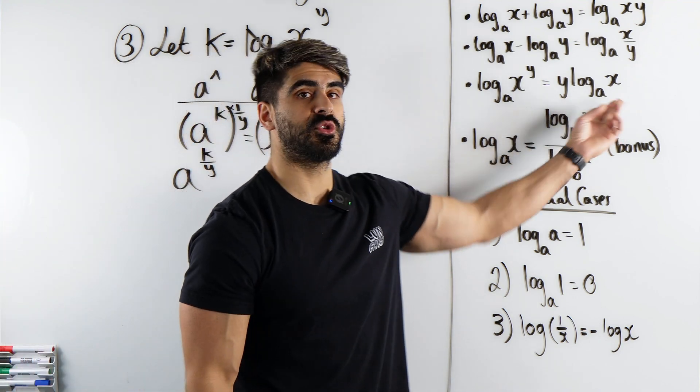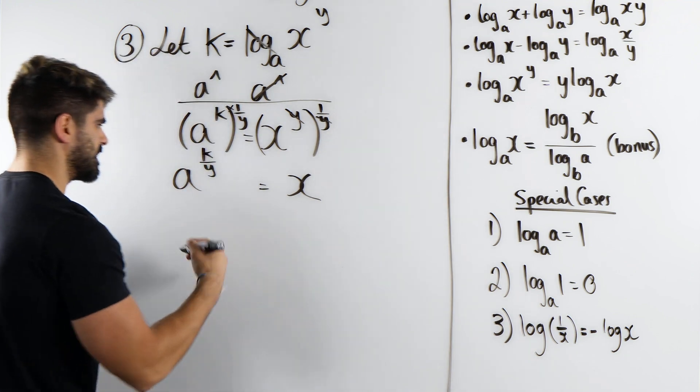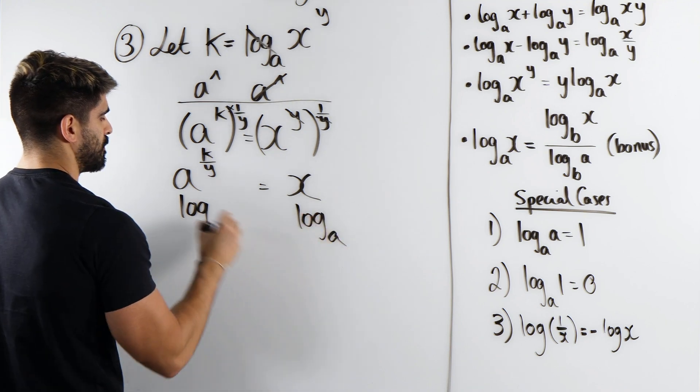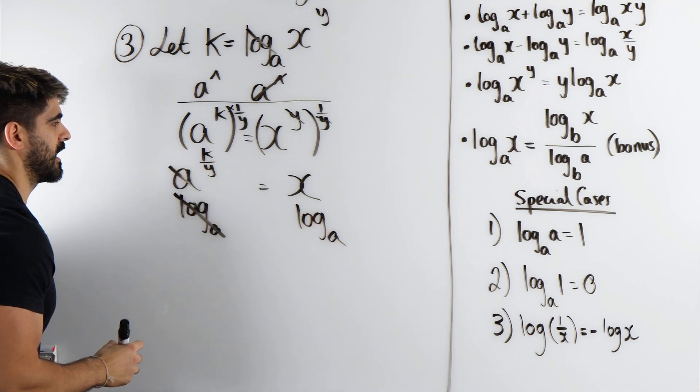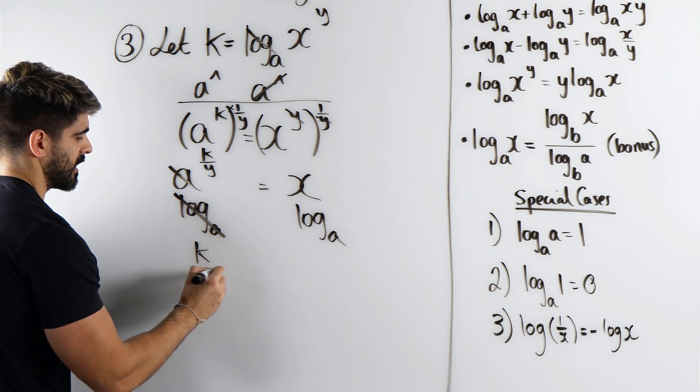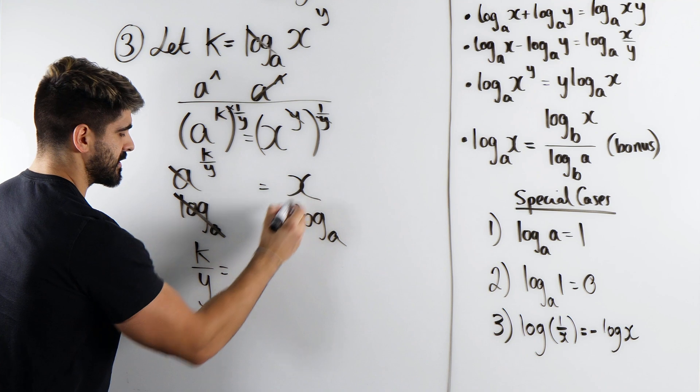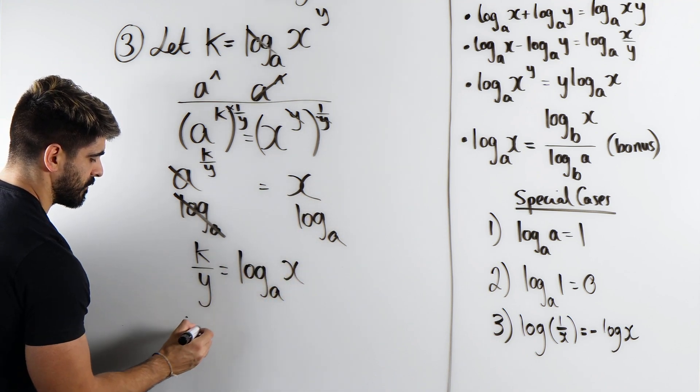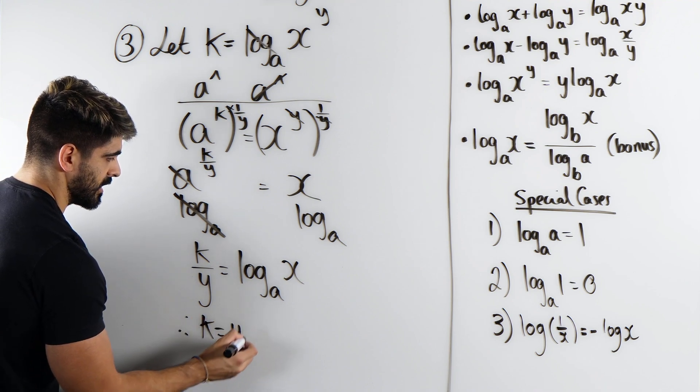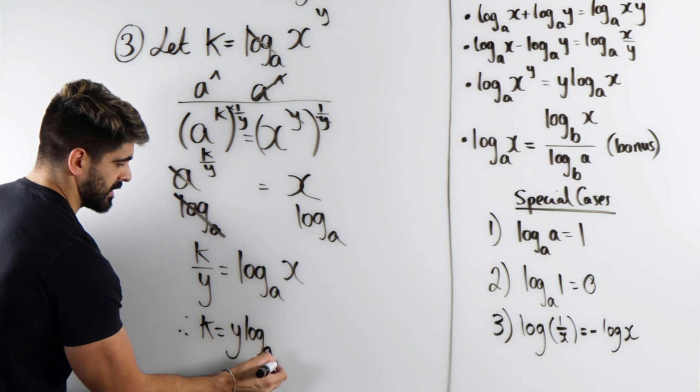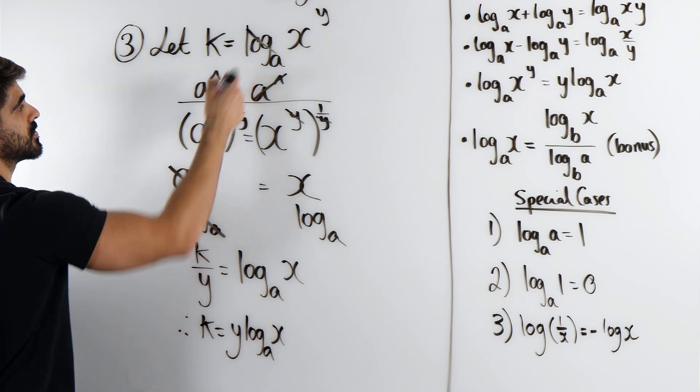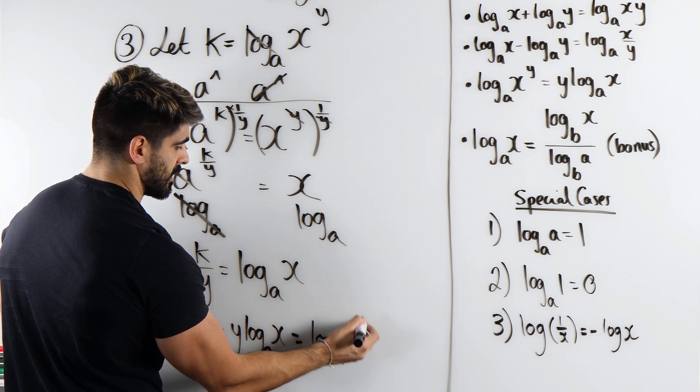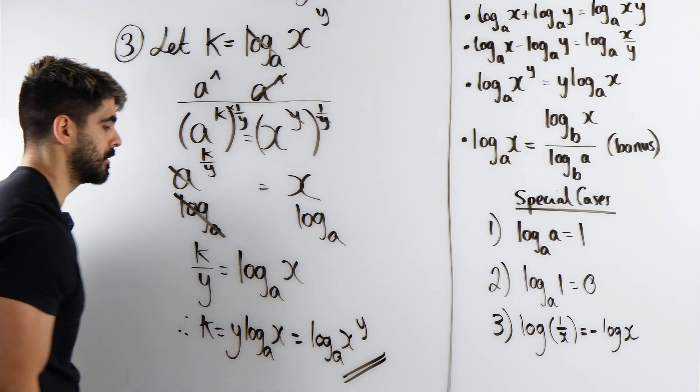Now, I'm going to return to log base A of X. So I'm going to do log base A of both sides, because log base A is the inverse of that. So we get K over Y is log base A of X, and then finally multiply through by Y. Therefore, K is Y log base A of X. Remember what K was, it was that. So log base A of X to the power of Y, and that's proved. Beautiful.